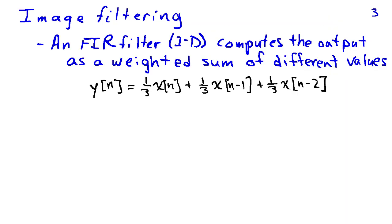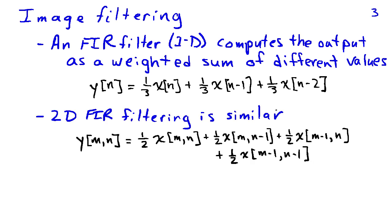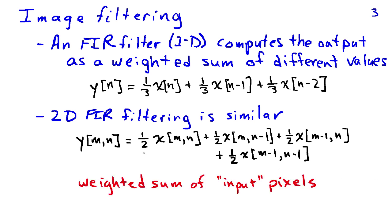We can apply filters to images just like we apply filters to time signals. An FIR filter in one dimension computes the output as a weighted sum of different values of the input — for example, y of n as the average of the three most recent values: one-third x of n plus one-third x of n minus one plus one-third x of n minus two. We can do the same with a 2D FIR filter using two indices m and n, writing the output y as a weighted combination of input image values. In this case, the weights are all one-half, summing four pixels.